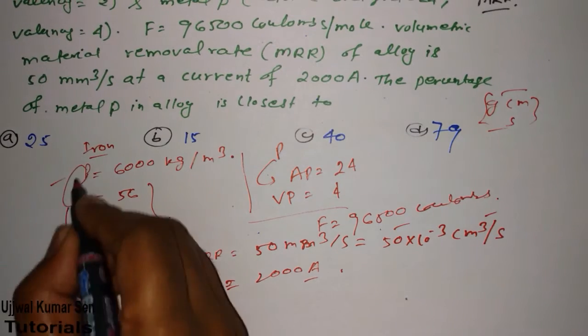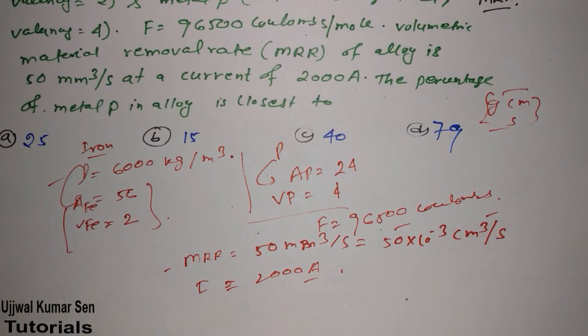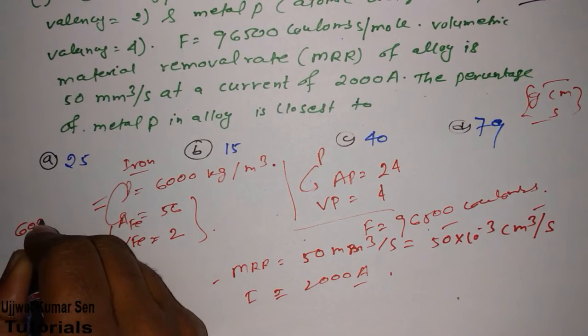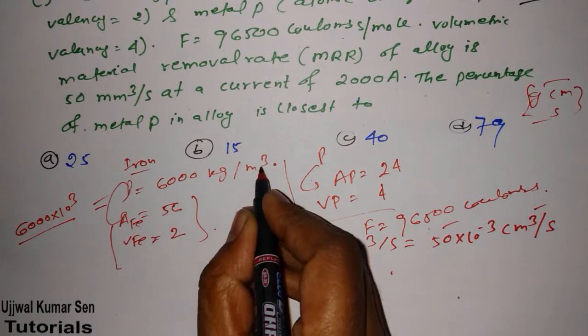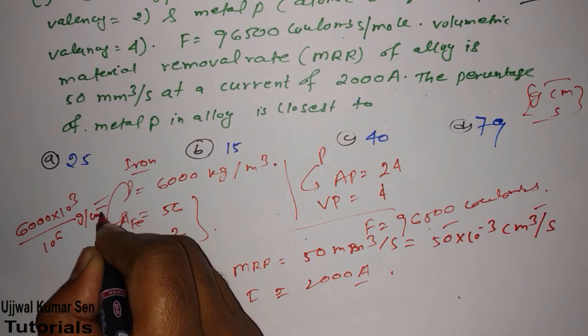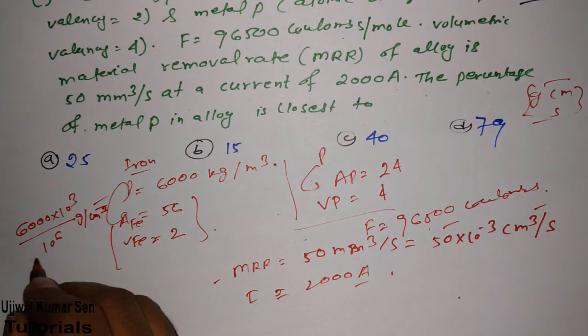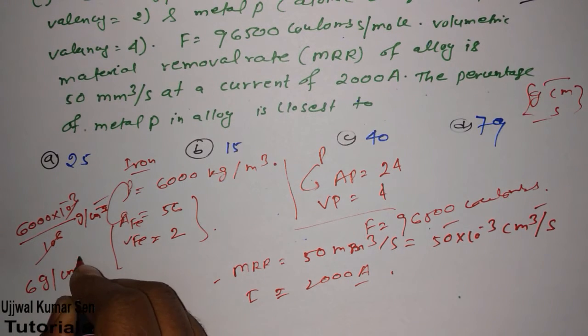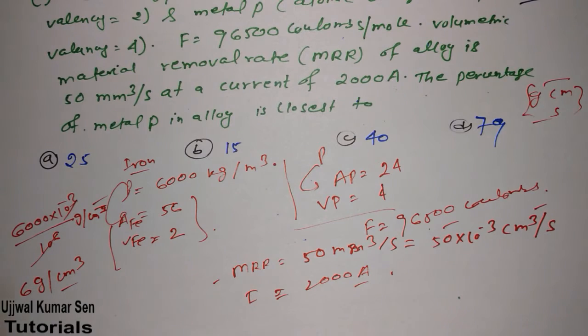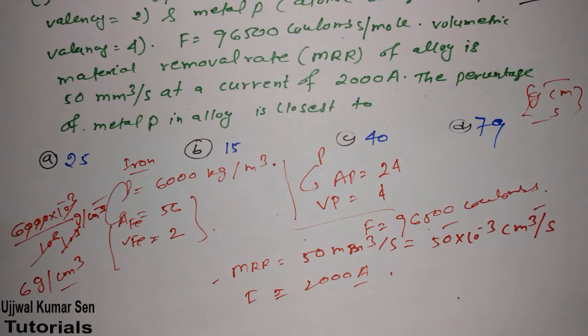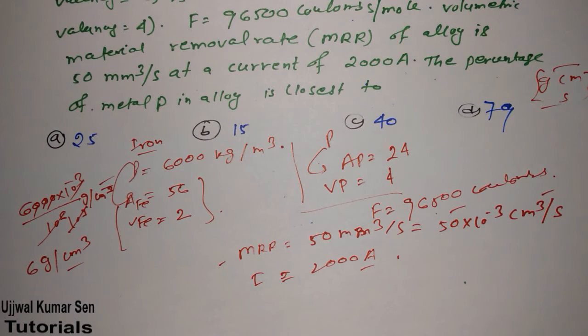Another one is density. It's given in kg per meter cube. We have to convert it into gram per centimeter cube. It's simple. 6000 kilogram means 10 to the power 3 gram, and meter means centimeter, 10 to the power 6. So gram per centimeter cube. Therefore, after calculation, we can say 6 gram per centimeter cube because 10 to the power 3 will be remaining and this we can cancel, so we will get only 6 gram per centimeter cube.